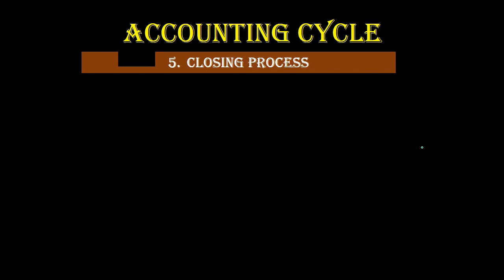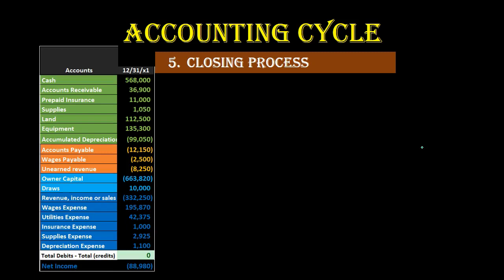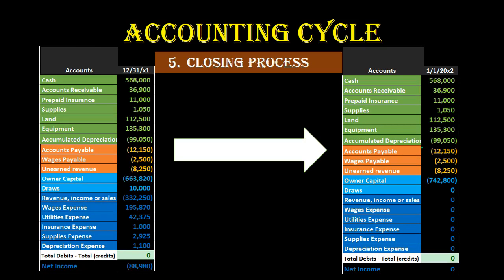After we have the financial statements we do the closing process. This is kind of like if the main event were the Super Bowl — then the closing process is cleaning up the stadium afterwards in order to start the process over again. We're going to take that adjusted trial balance, close out the temporary accounts — those scoreboard accounts: the revenue accounts, income statement accounts, draws accounts. Those are going to be zeroed out. As of the first day of the next month we want them at zero, just like we want the scoreboard in a new game to be zero so we can start counting up again from that point forward.